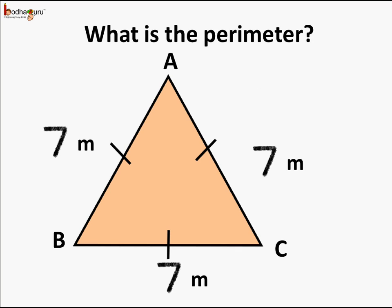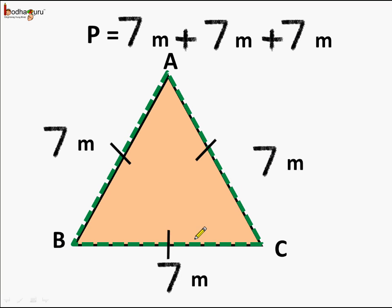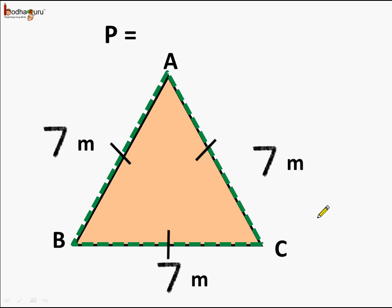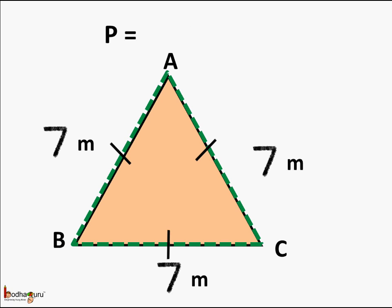And what will be the perimeter now? We know the perimeter is the total boundary of the closed figure. So here it becomes equal to 7 meters plus 7 meters plus 7 meters. We can say perimeter is equal to 3 times 7 meters, as all three sides are of equal length. So the perimeter is equal to 3 times the side length, and hence the perimeter becomes equal to 3 multiplied by 7, which is equal to 21 meters.